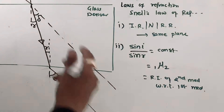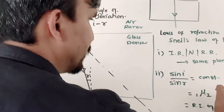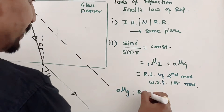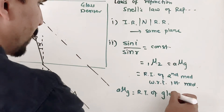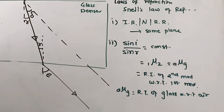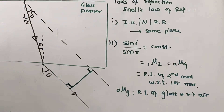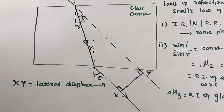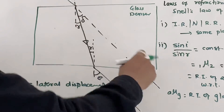If light is going from air to glass, I write this as a-mu-g — the refractive index of glass with respect to air. The perpendicular distance between the incident ray path and the emergent ray is called lateral displacement, denoted xy. Lateral displacement is defined as the perpendicular distance between the emergent ray and the path of the incident ray.